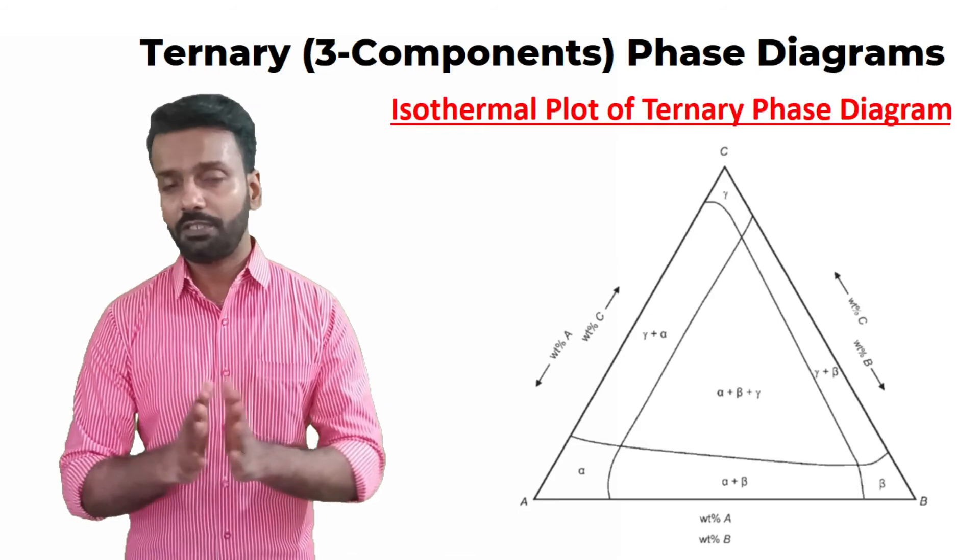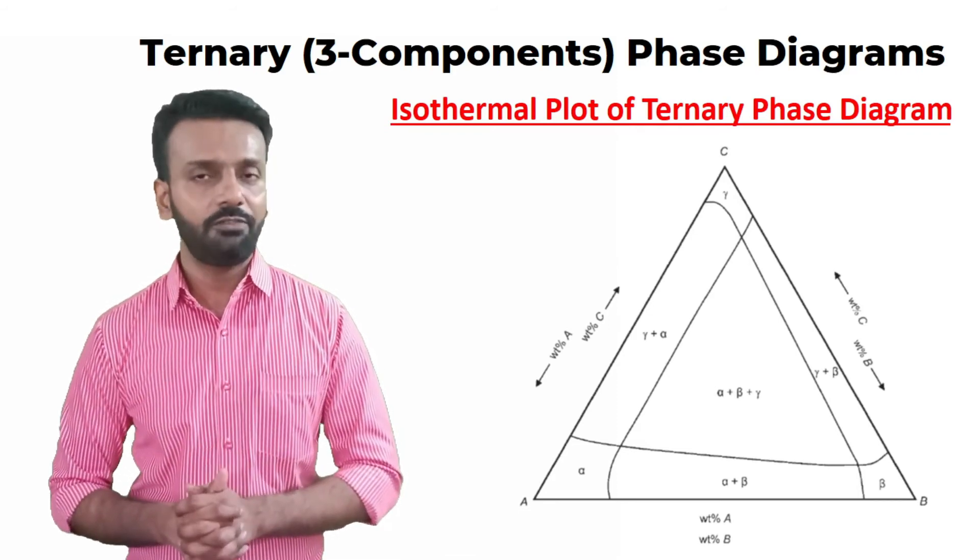I hope you now have information about what are the different types of phase diagram. There are three types: unary, binary, and ternary phase diagrams. The most important is the binary phase diagram — in exams you are typically given this diagram and asked to describe the different phases present, their compositions, and the percentage of different phases. Thanks for watching, all the best.